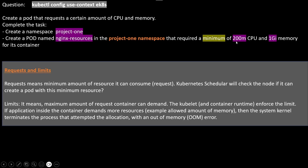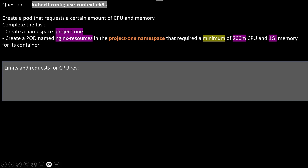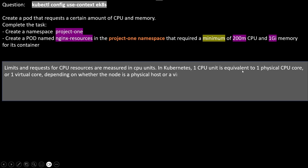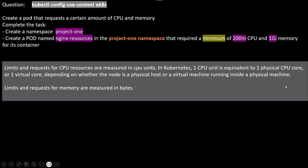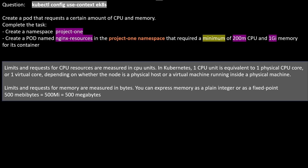It can request a minimum of 200 millicores. Limits and requests for CPU resources are measured in CPU units. In Kubernetes, one CPU unit is equivalent to one physical CPU core or one virtual core, depending on whether the node is a physical or virtual machine. Limits and requests for memory are measured in bytes. For example, 500 megabytes equals 500Mi. GI stands for gibibyte.